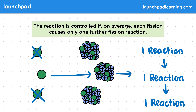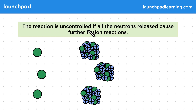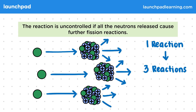So what happens if the reaction isn't controlled? The reaction is uncontrolled if all of the neutrons released cause further fission reactions. We start with one reaction. This one reaction leads to three reactions as all of the neutrons cause another reaction. If three neutrons are produced from each nucleus, there will be nine reactions that follow. Those nine reactions will go on to cause twenty-seven further reactions, and then eighty-one reactions follow that. As you can see, the rate in a chain reaction increases rapidly.